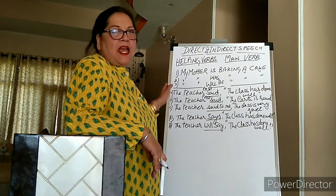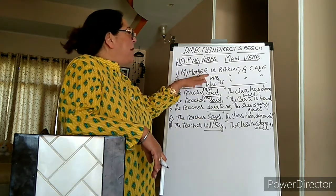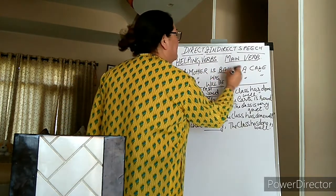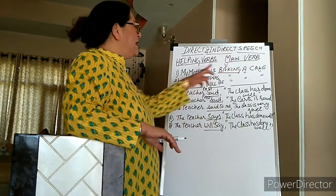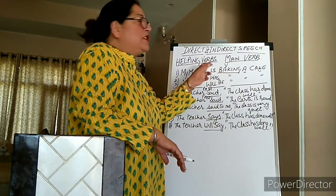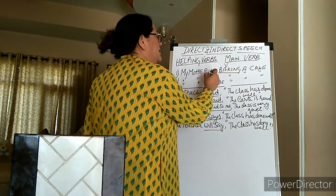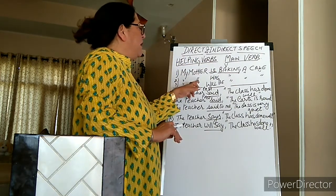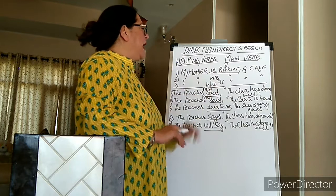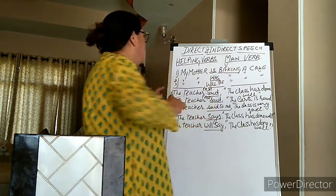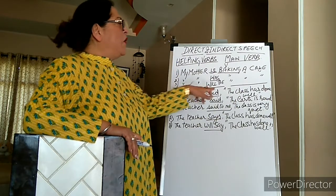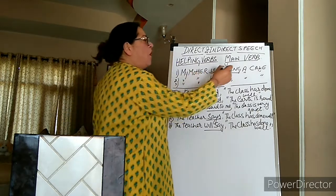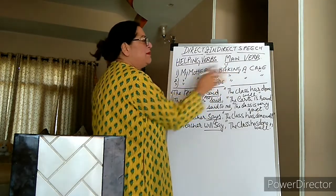The first sentence I have written on the board is: my mother is baking a cake. The main verb is baking, but there is another word qualifying baking, and that is 'is' — is baking a cake. The second sentence is: my mother was baking a cake. The third sentence is: my mother will be baking a cake. In all three, the main verb is baking.